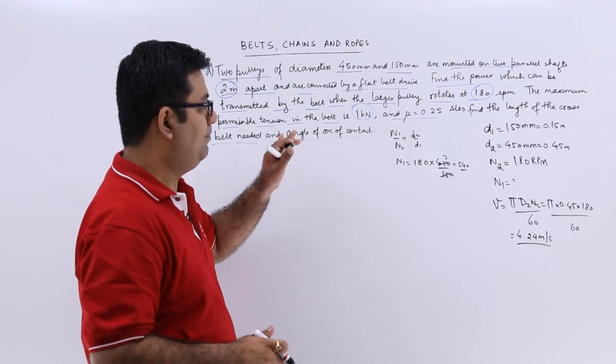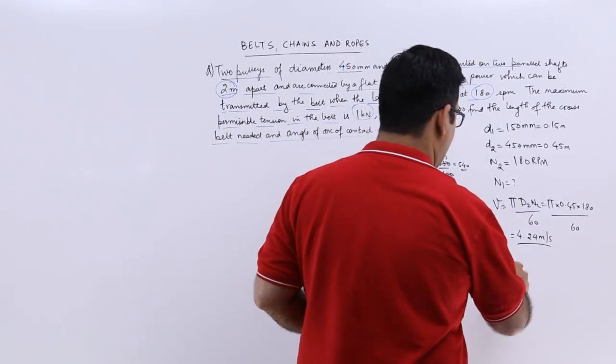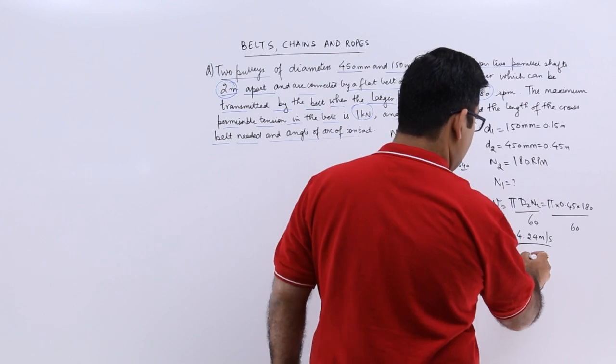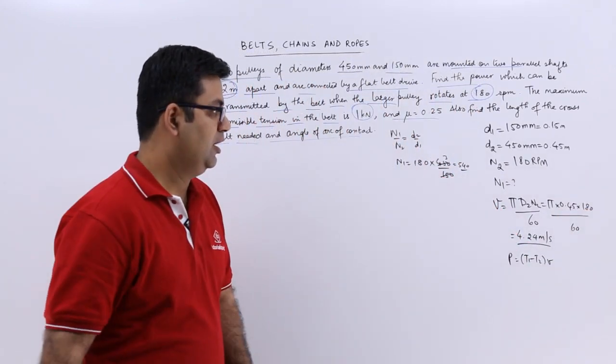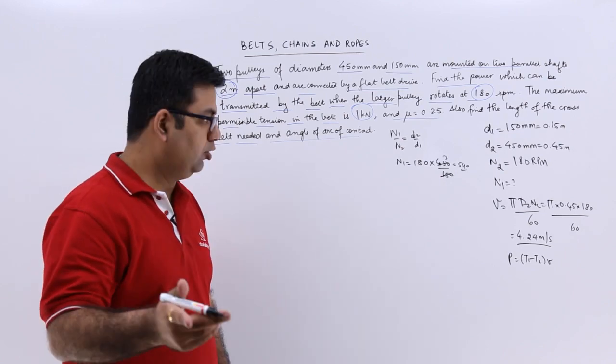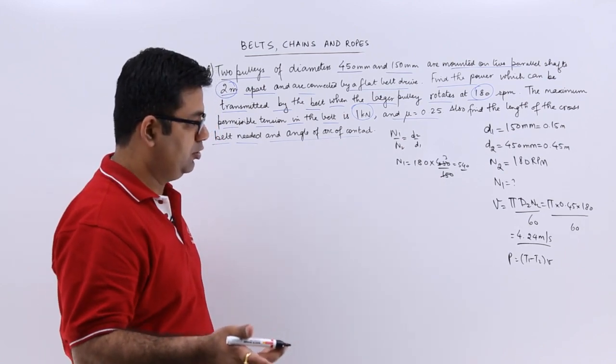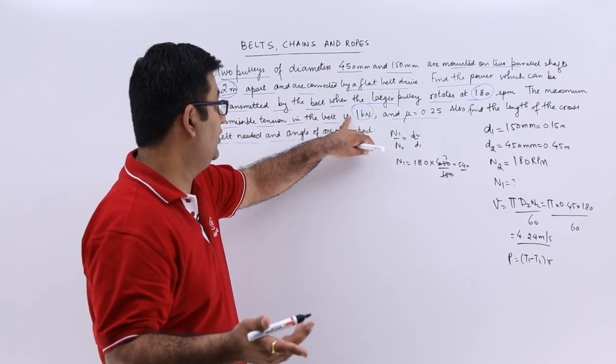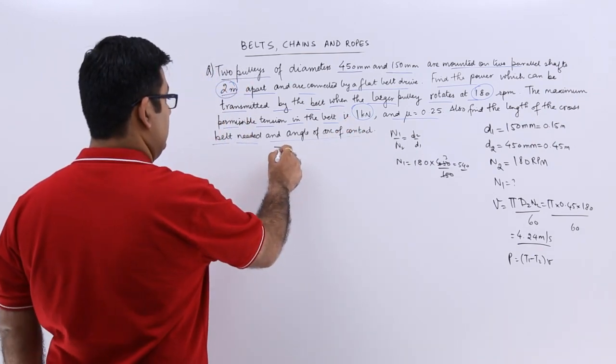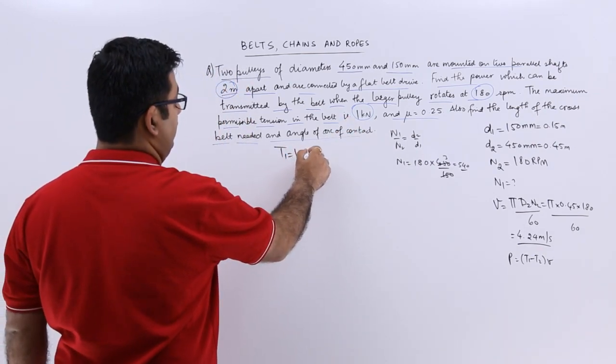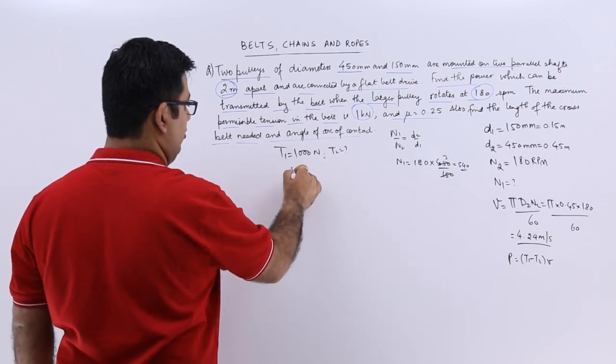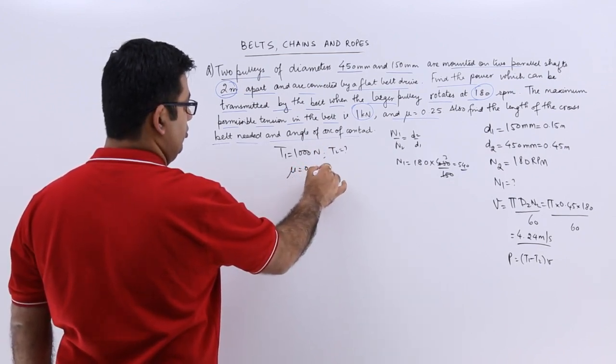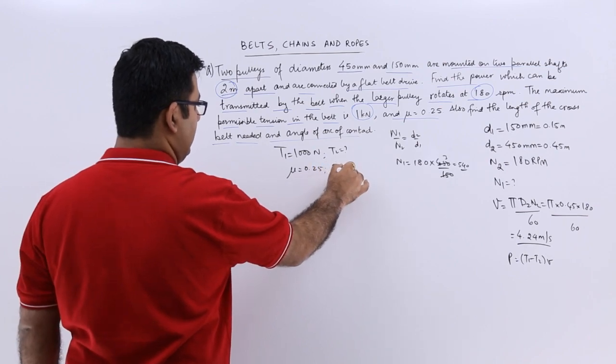So for power I need to apply this formula: T1 minus T2 into V. I don't know T1. I know T1 which is 1000. So T1 is 1000 N. I don't know T2. I know the value of mu. And I need to calculate theta.